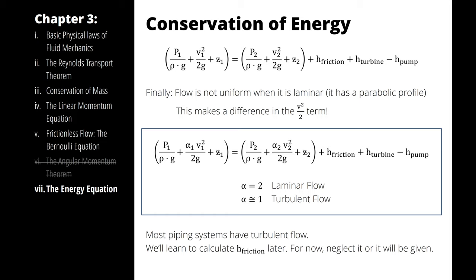Then the last simplification we make is to account for what happens when our flow is not a perfectly distributed profile. When it is laminar, it has a parabolic profile that affects our kinetic energy term. Therefore, we add in a quantity called alpha to account for that. So our conservation of energy equation is pressure over density times gravity plus alpha times velocity squared over 2 times gravity plus z1 is equal to pressure over density times gravity plus alpha times velocity 2 squared over 2 times gravity plus z2 plus the friction head plus the turbine head minus the pump head. And when we have laminar flow, we are plugging in an alpha value of 2, and for turbulent flow, we are plugging in an alpha value of 1.